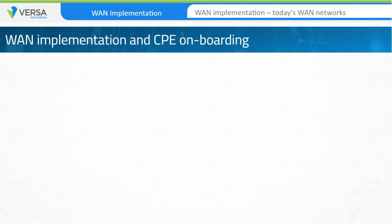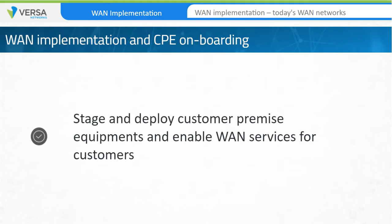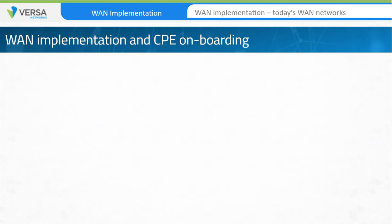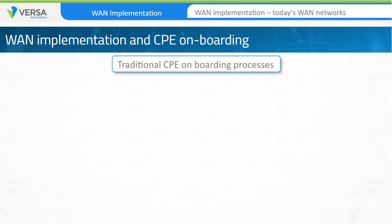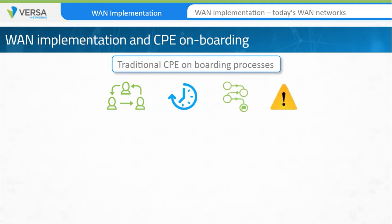WAN implementation is the process used to stage and deploy customer premise equipment and to enable WAN services for customers. The traditional CPE onboarding process has been a manual and time-consuming process. Even after proper design and planning, implementation is still considered to be a tedious process and prone to human errors. Once a service provider delivers a WAN link to a site, engineers have to configure the CPE devices manually and perform various performance tests. Engineers sometimes have to stay at the site and work for days in order to ensure that the CPE is functioning as expected for a customer.